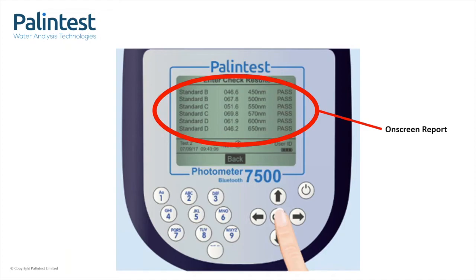This makes it easy to input the values on the certificate into the memory of the instrument. Then, each time you run the check standards through, you don't need to refer to the certificate. The instrument already knows the values and tells you whether it has passed or failed on each wavelength. It then displays an on-screen report.